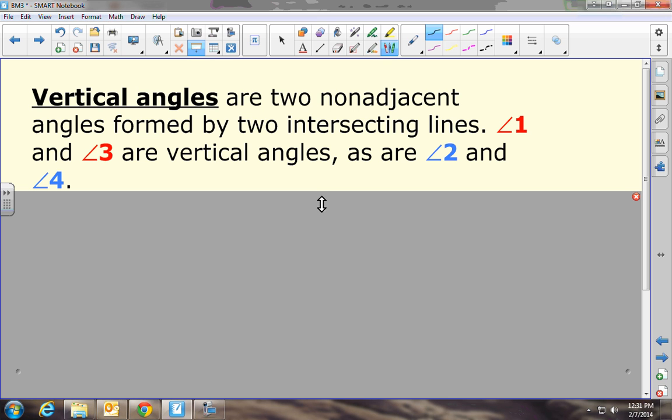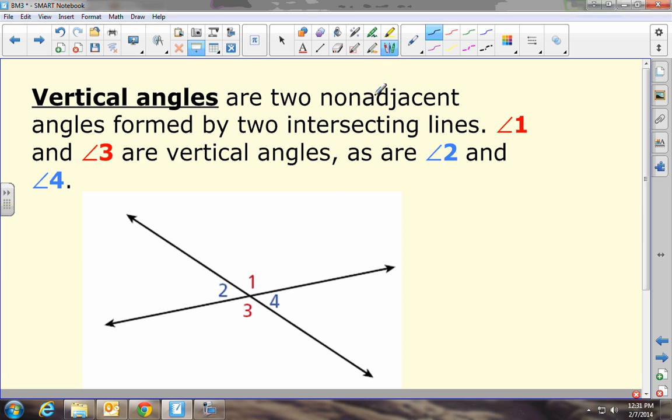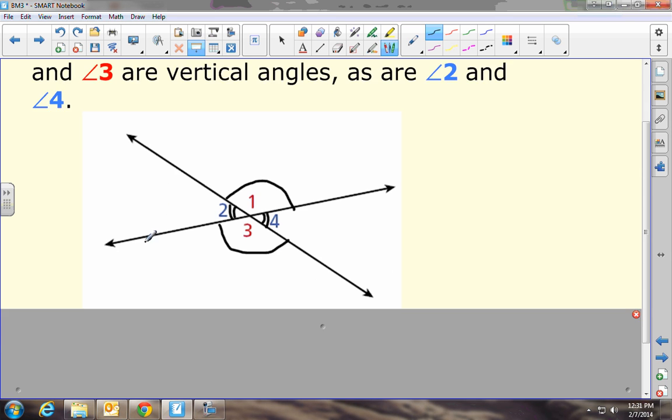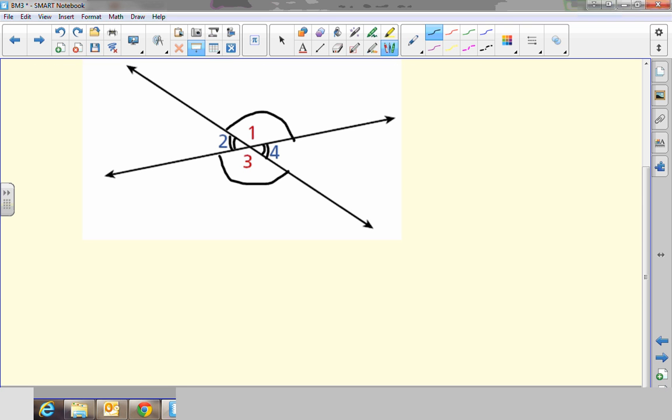Okay, next concept. Vertical angles are two non-adjacent angles formed by two intersecting lines, and they're congruent. Okay, so angles 1 and 3 are vertical angles. They're opposite from each other, and they're congruent. You'll notice that angle 1 looks about the exact same as angle 3, and they are. Angle 2 and angle 4, they are vertical angles as well, so they are congruent as well. Okay, we love vertical angles because they're always congruent, and it's just easy.